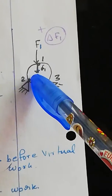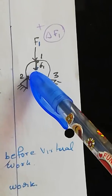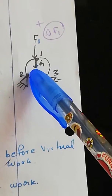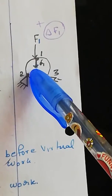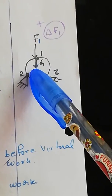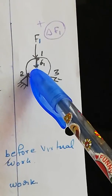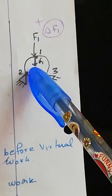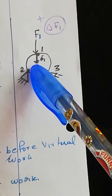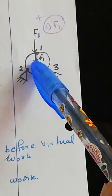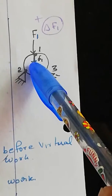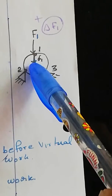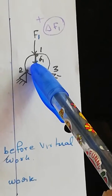The only displacement that can occur will be at point one due to the force F1. A displacement delta-1 occurs, and this delta-1 is in the direction of F1. So we can call this delta-1 the work-absorbing component, because the displacement generated is in the direction of the applied force.